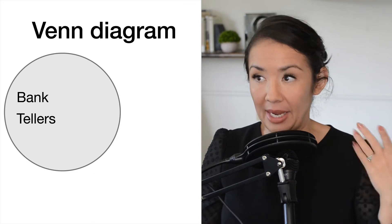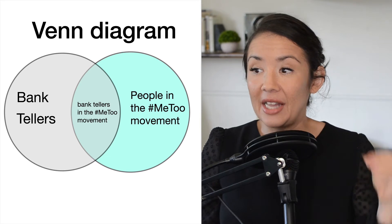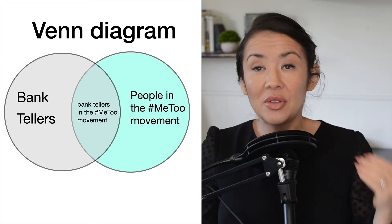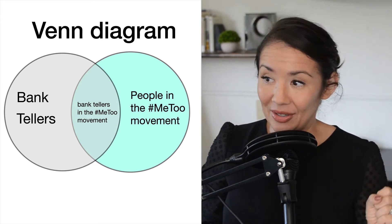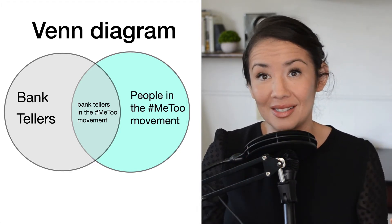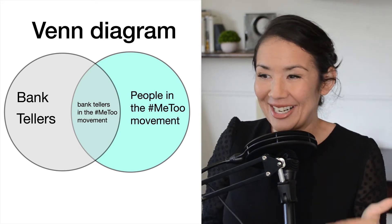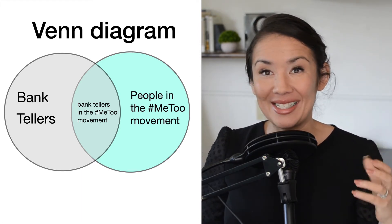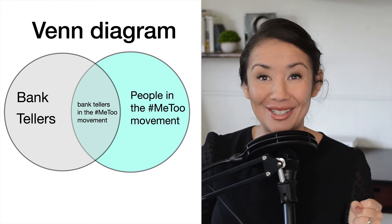We can see this in a Venn diagram, where we have bank tellers, people in the Me Too movement, and the proportion of people that are both is simply smaller. There will always be a higher probability of someone being a bank teller or someone being in the Me Too movement than someone being both. But it seems very representative that this person is both a bank teller and in the Me Too movement because it fits that description so well, which is why this heuristic has such a strong hold on our decisions.